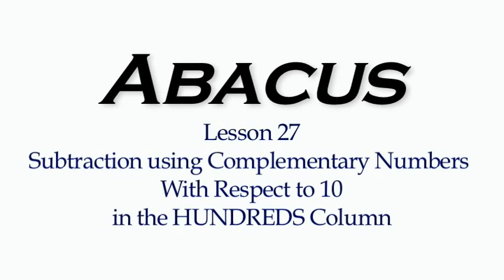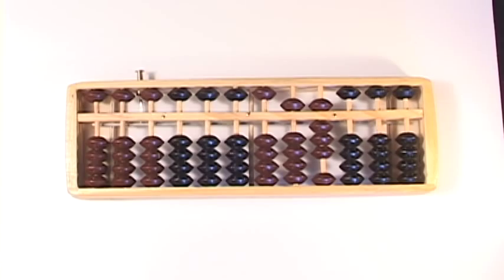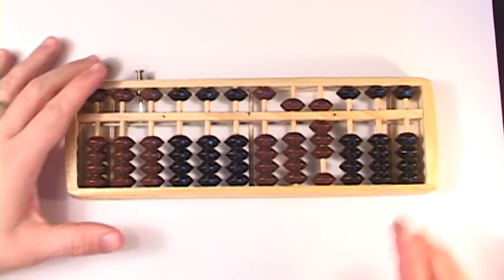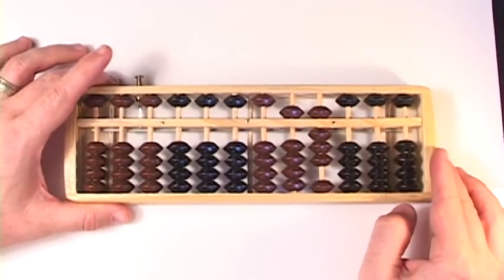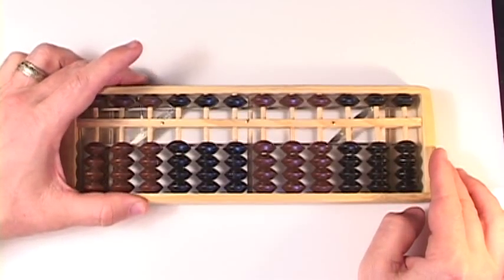Alright, lesson 27, subtraction using complementary numbers with respect to 10 in the 100s column. This isn't going to be too hard for you, I don't think, so we'll just do a few of these. Because this is some fun stuff.